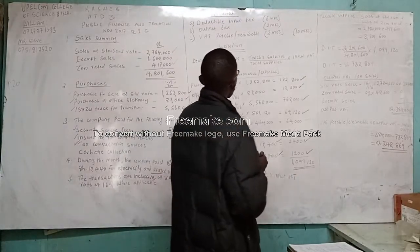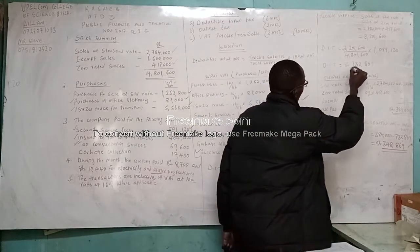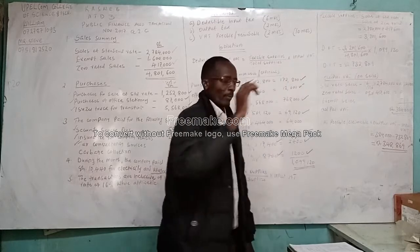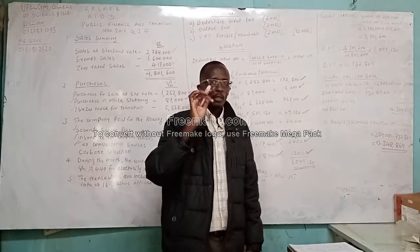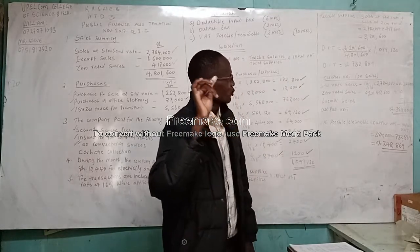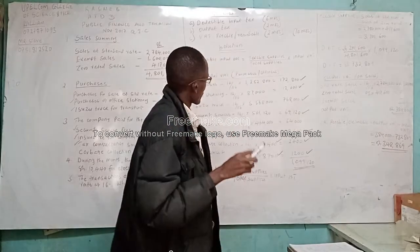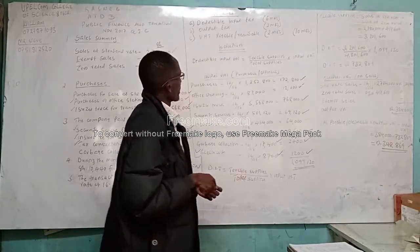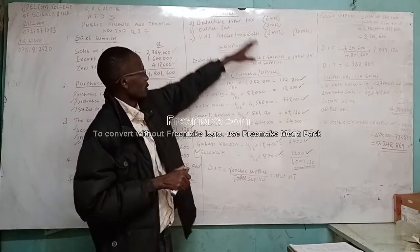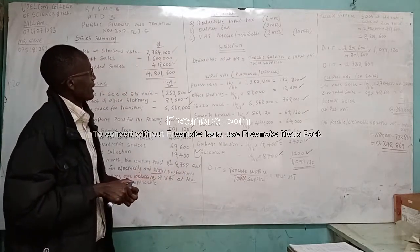Our deductible input tax will be shillings 702,869. That is the deductible input tax. That is how the student could have attempted part 1 to score the 6 marks.